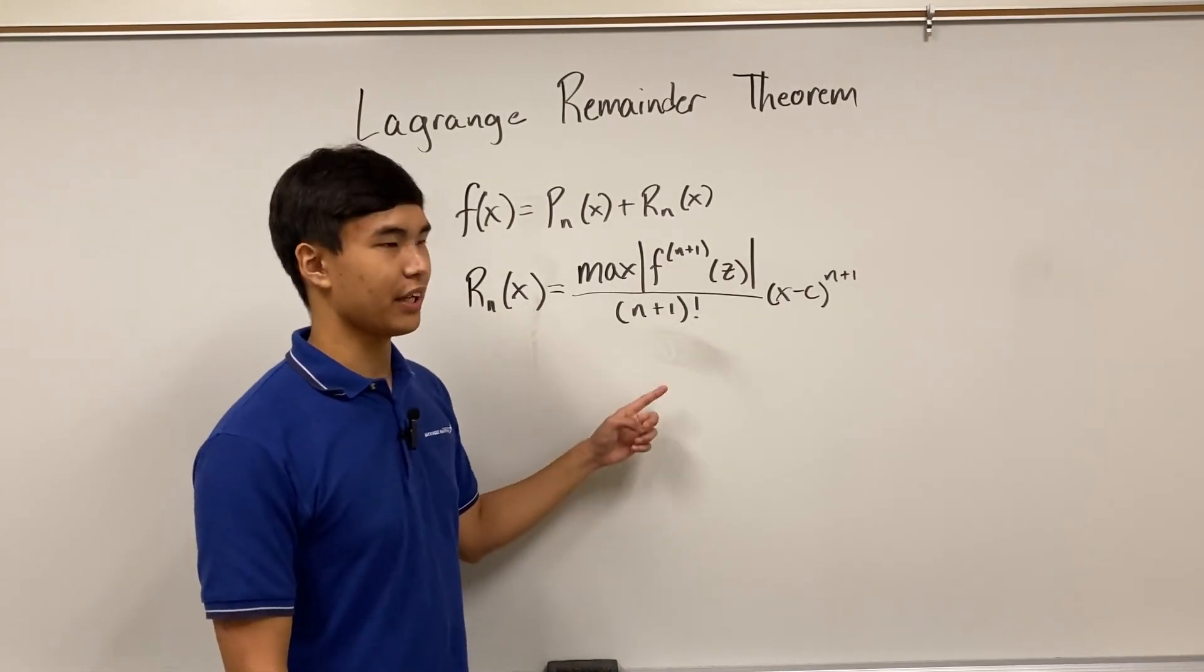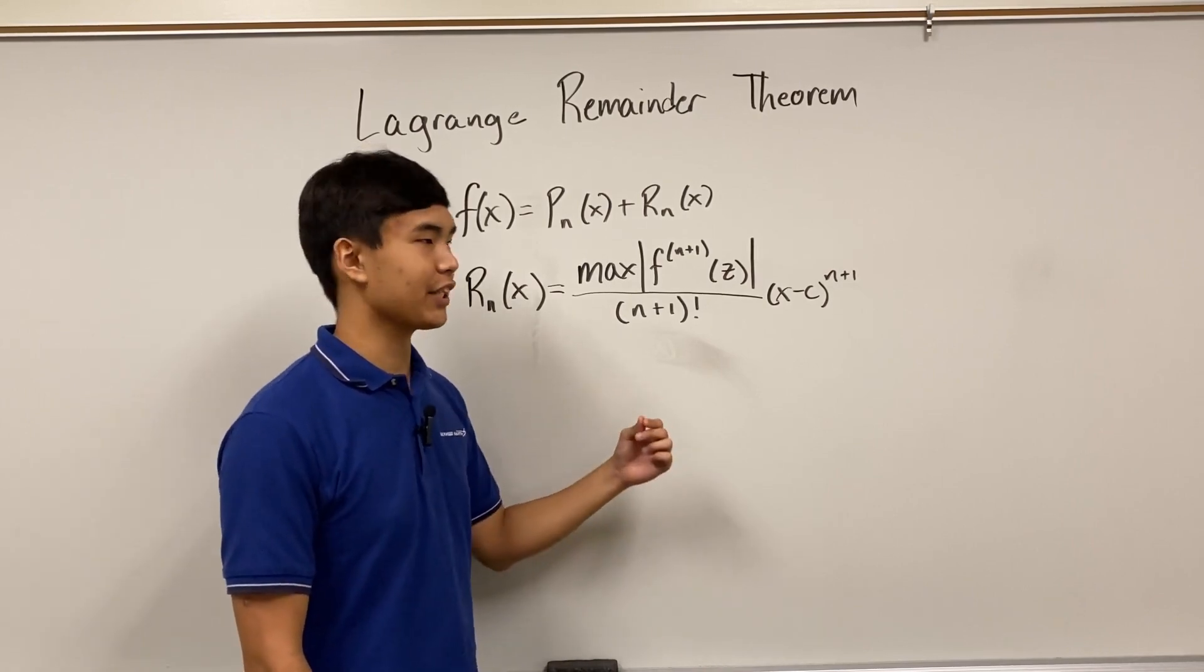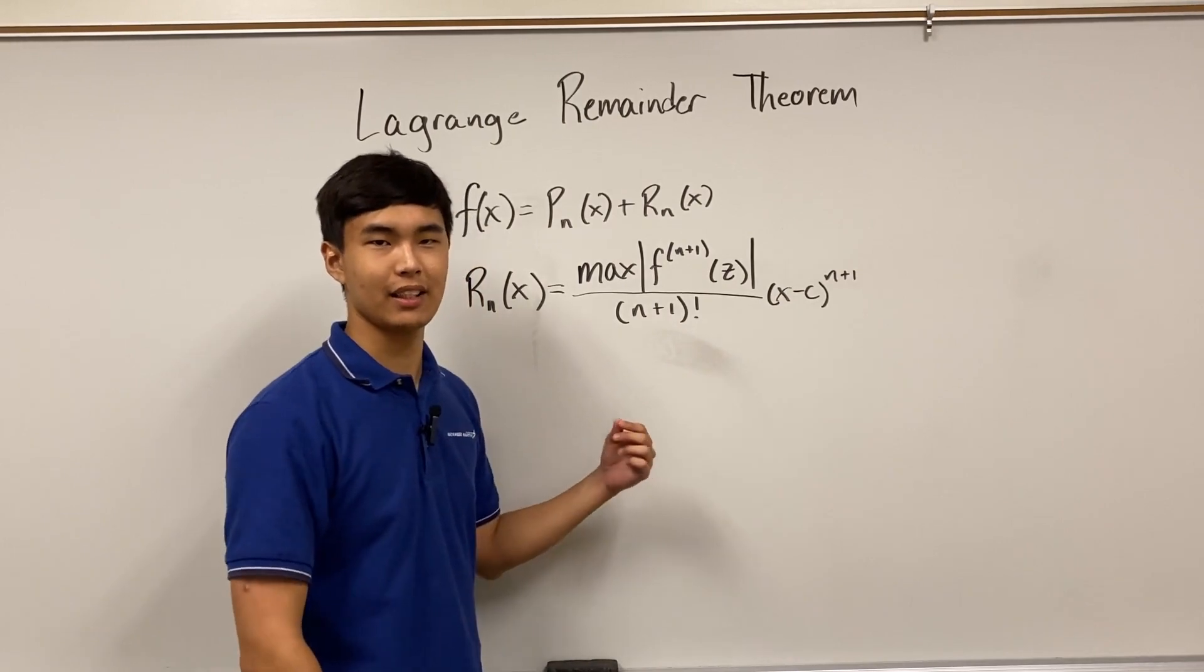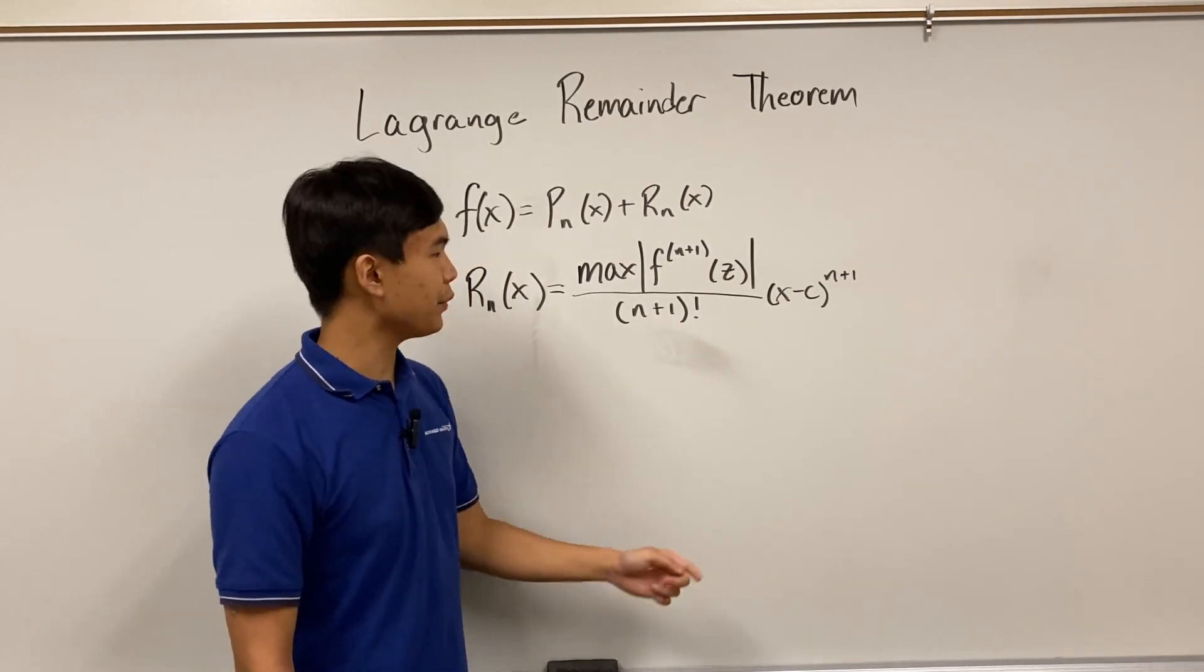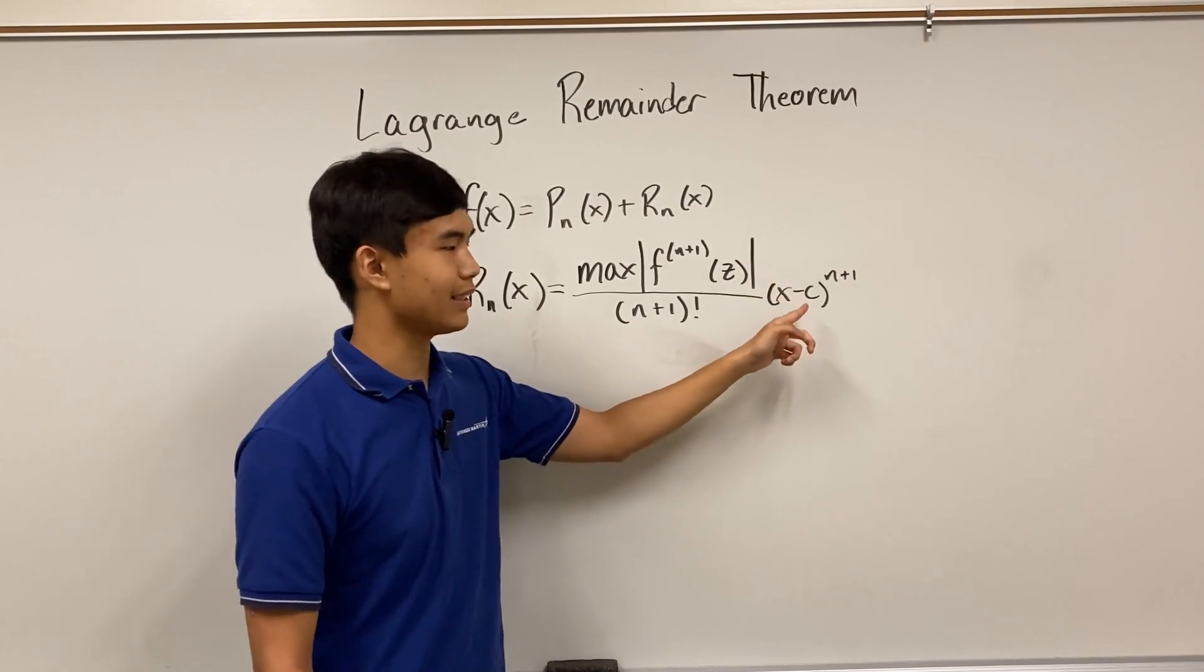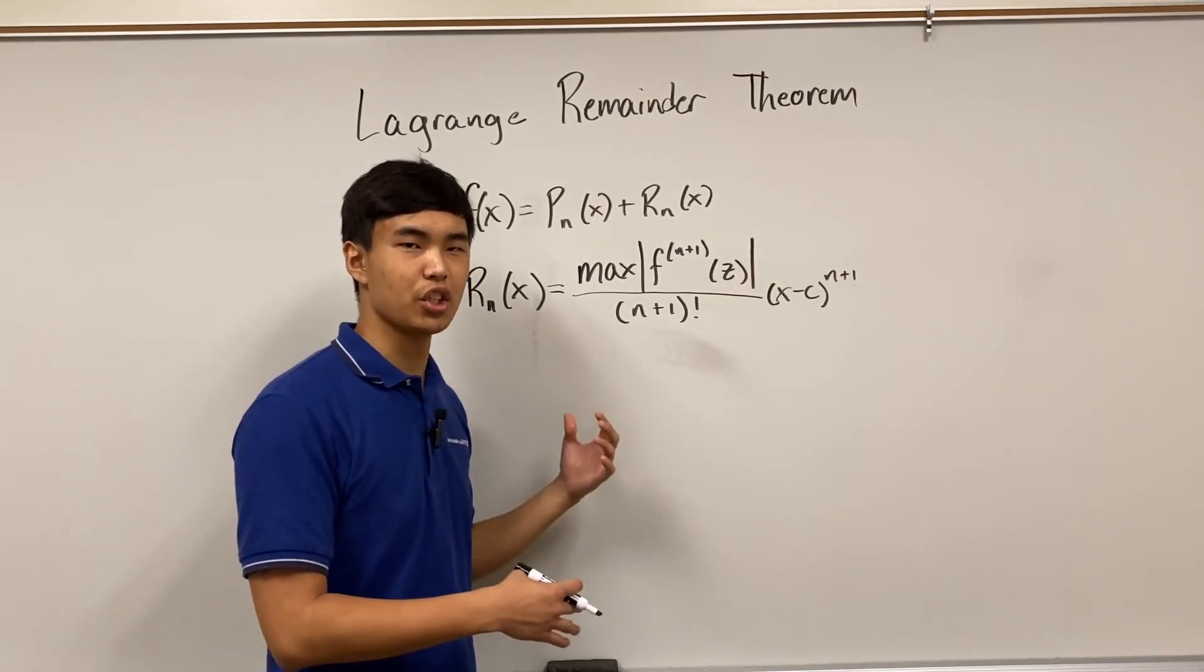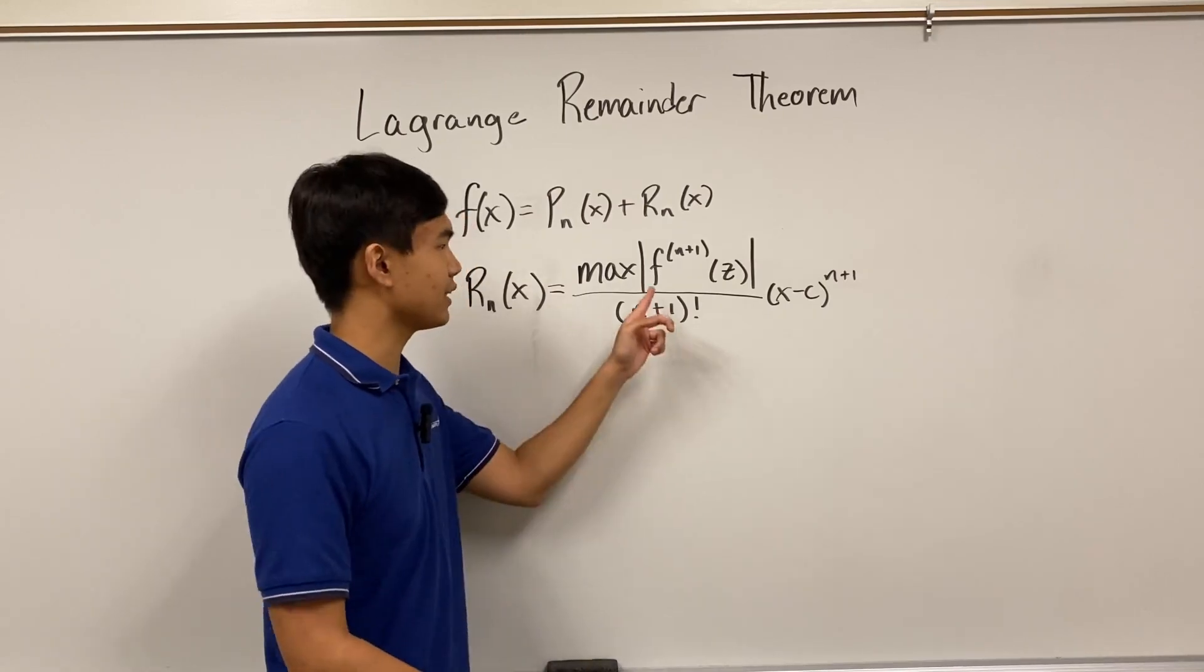And remember that by adding another value to the series, we're improving its accuracy. So that's why everything is n plus one because it's the next neglected term. When you add another term, notice that n plus one factorial is a constant and x minus c to the n plus one is also a constant. The only thing that could change your correction by adding the n plus one term is this derivative.